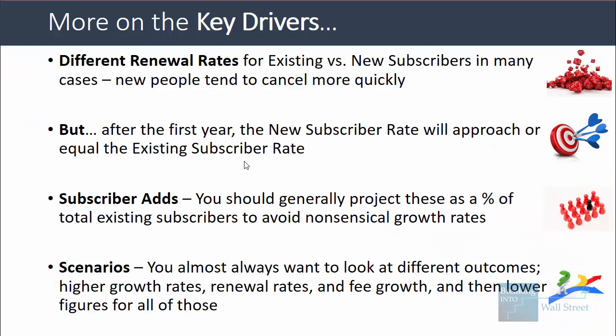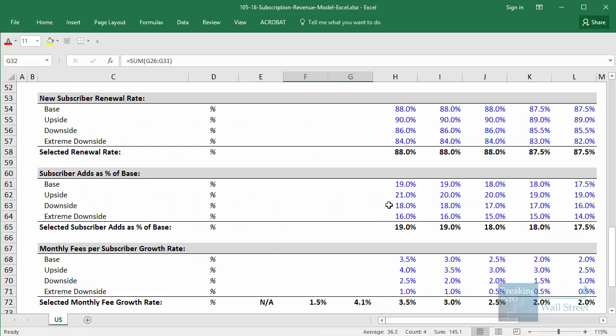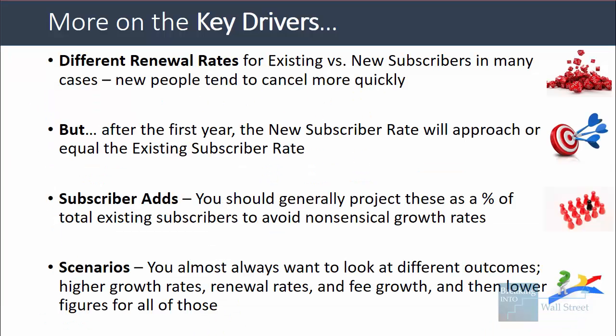You also want to look at different outcomes — what happens when there's a higher growth rate, a higher renewal rate, higher fee growth, and then a lower growth rate, lower renewal rate, and lower fee growth as well. That covers the key drivers. Let's move on to the next part: gathering the information.